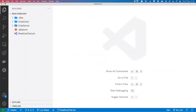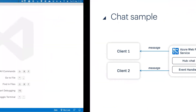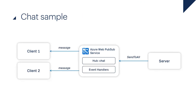Let's look at some of the code. The WebPub Sub service runs in Azure, but your clients and server could run anywhere — they don't need to run inside Azure. It could be a web application running somewhere else, on-prem, in Azure, other clouds, wherever.